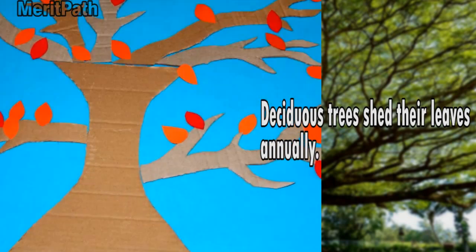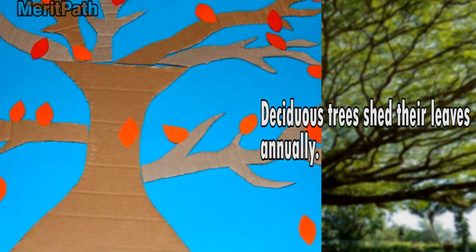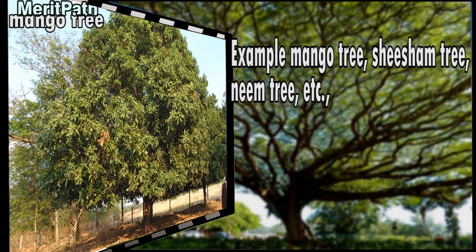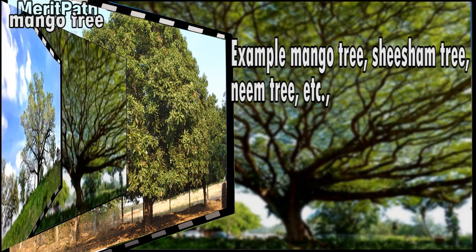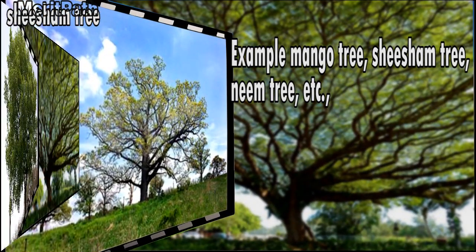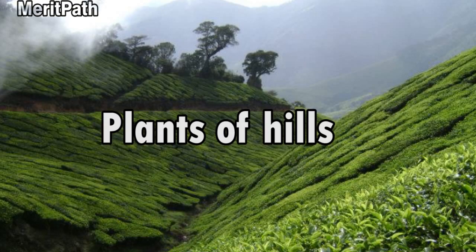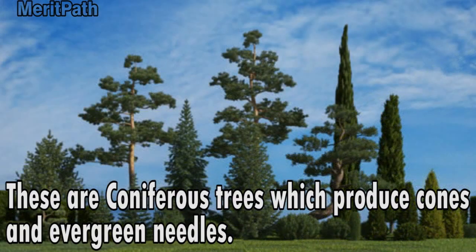Plants grown in plains are called deciduous trees, meaning they shed their leaves annually. Examples include the mango tree, shisham tree, neem tree, etc. Plants of hills are coniferous trees, meaning the tree produces cones.